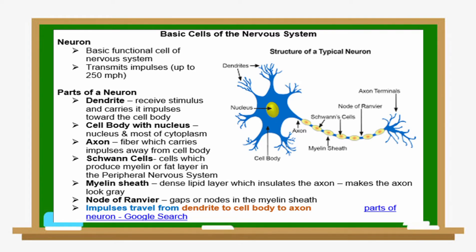The neuron is the basic functional cell of the nervous system and transmits impulses. Parts of a neuron: the dendrite receives stimuli and carries impulses towards the cell body. The cell body contains the nucleus and most of the cytoplasm. The axon is a fiber which carries impulses away from the cell body. Schwann cells produce myelin, a fat layer, in the peripheral nervous system. The myelin sheath is a dense lipid layer which insulates the axon. Nodes of Ranvier are gaps in the myelin sheath.